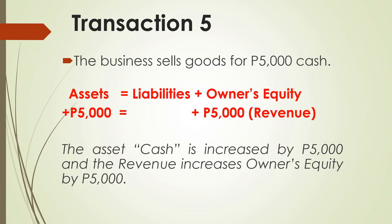Transaction number five: the business sells goods for $5,000 cash. The asset cash is increased by $5,000, and revenue increases owner's equity by $5,000. Revenue is a component of owner's equity, which is why it increases owner's equity. The accounting equation is balanced: $5,000 equals $5,000.